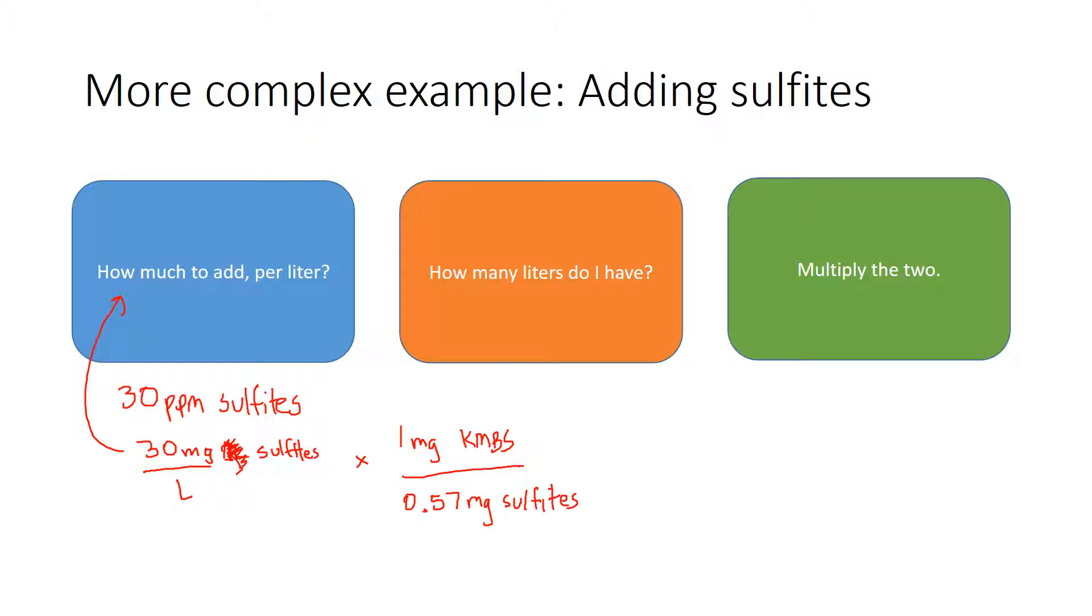So now my units cancel. I had milligrams of sulfites here in the numerator. I have milligrams of sulfites in the denominator. And so now I just do the math. And I think if I have the math correctly, this comes out to 56 milligrams of potassium metabisulfite per liter.